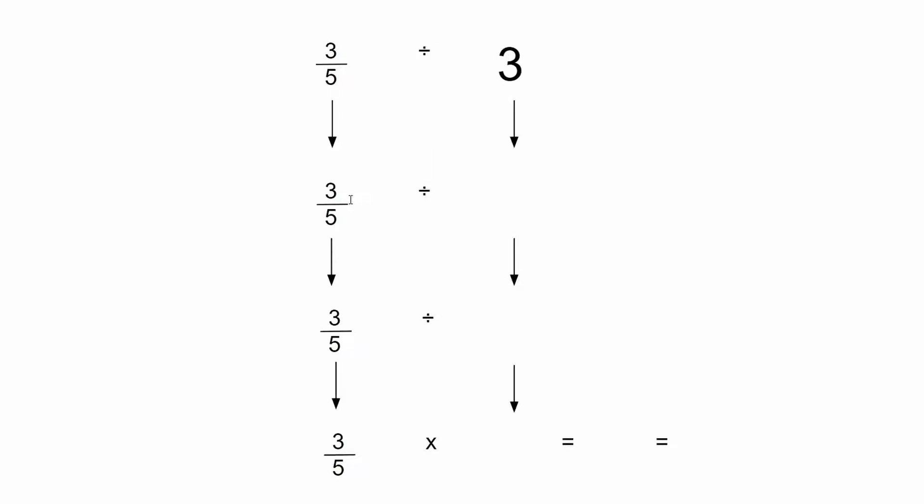So the first thing I need to do, and you can see as well, that three fifths stays the same throughout. First thing I need to do is to convert three into an improper fraction. So that looks like this, three over one.